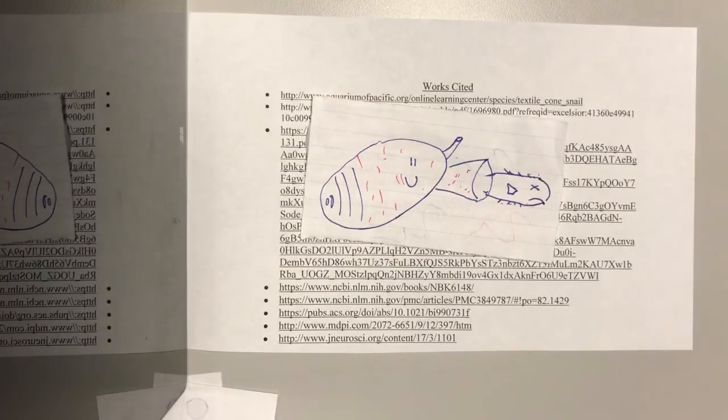Here's a scholarly picture of a cone snail eating a fish while I talk about the current direction of research. Okay, so toxins such as OMIA, which is an alpha-conotoxin, which are the ones that bind to the ion-gated channels, are being studied as they could lead to treatments for brain disorders such as Alzheimer's and Parkinson's.